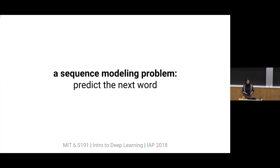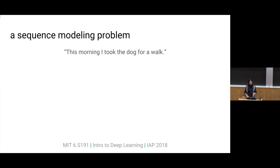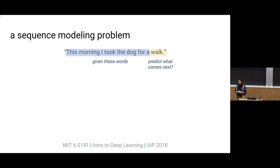I'm going to walk through a sequence modeling problem to motivate why we need a different framework specifically for modeling sequences, and what we should be looking for in that framework. The problem is predicting the next word — given these words, we want to predict what comes next. The first problem we run into is that machine learning models not explicitly designed to deal with sequences take as input a fixed-length vector. We have to specify the size of the input right at the outset — we can't sometimes feed in a vector of length 10, other times a vector of length 20. It has to be fixed length. Sometimes we might have seen 10 words and want to predict the next word; sometimes we might have seen four words. So we have to get that variable-length input into a fixed-length vector.